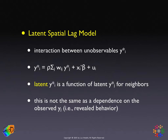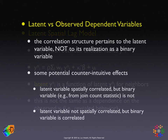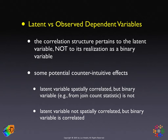It's very important to keep that distinction separate, and it's very tempting in interpretation to forget it. The correlation structure pertains to the latent variable and not to its realization as a zero or one binary variable. This can lead to potentially counterintuitive findings. For example — although this is unusual but it can happen — a latent variable that is spatially correlated, but the binary variable is not.